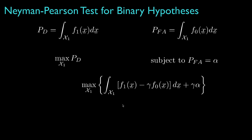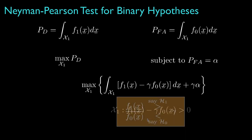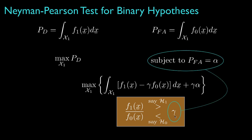If we want to maximize this objective, we should include only the positive terms in the integral. That means the classification region should be the places where the density under hypothesis 1 minus gamma times the density under hypothesis 0 is greater than 0. This means we classify data as hypothesis 1 when the likelihood ratio exceeds some threshold gamma, whose value should be chosen to attain the desired false alarm probability.